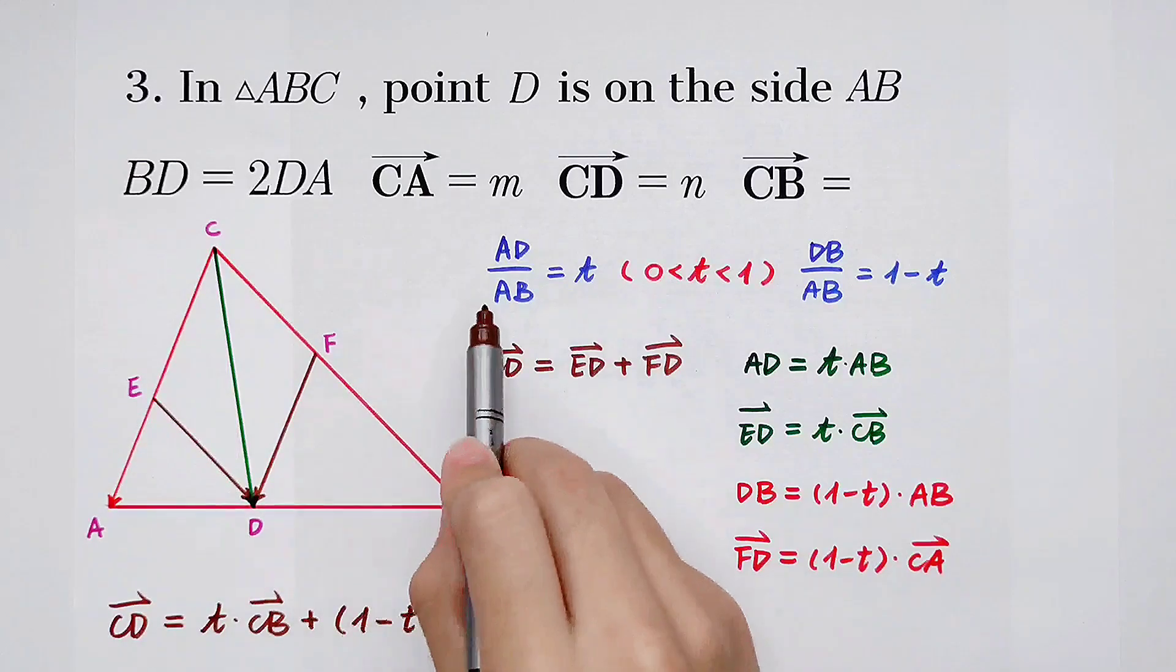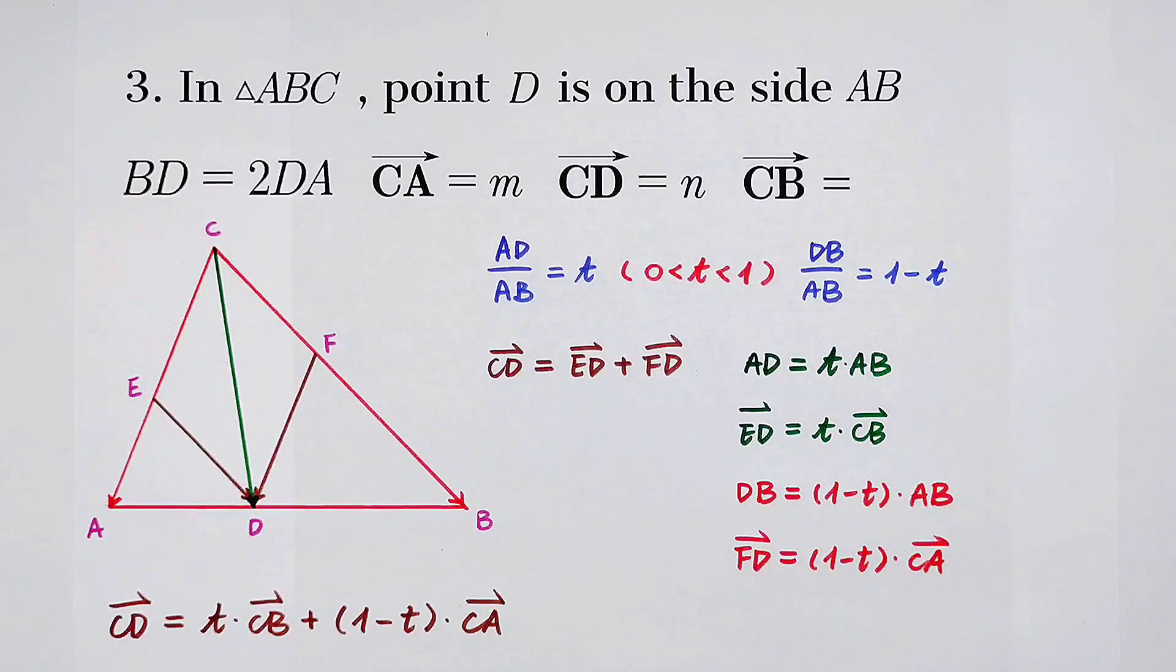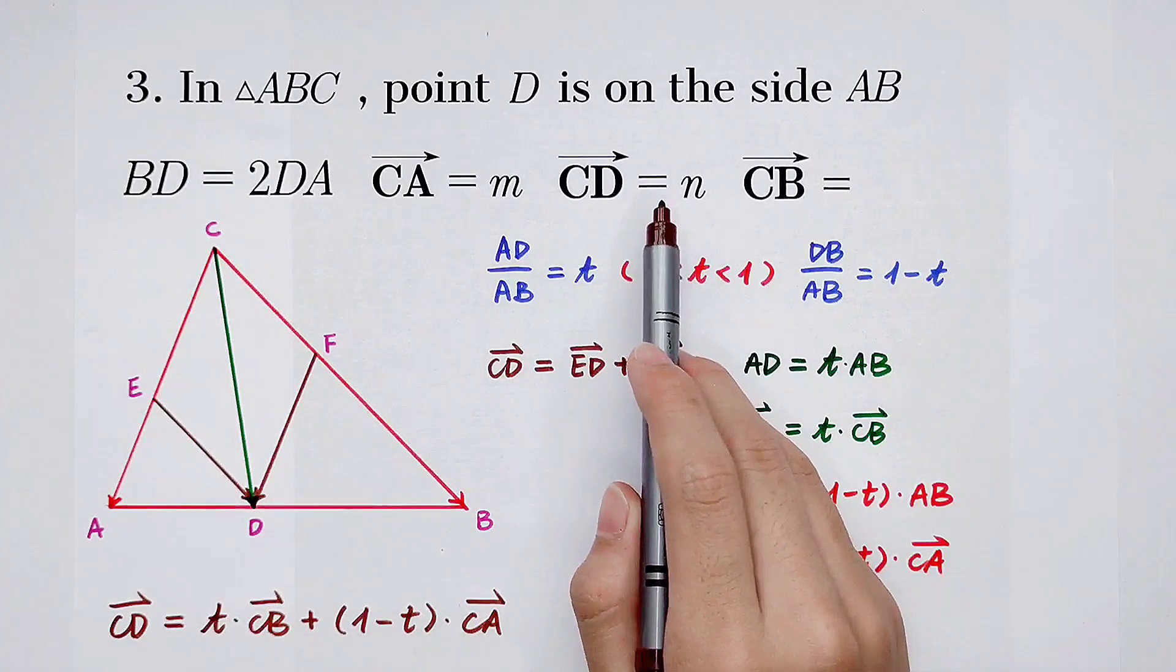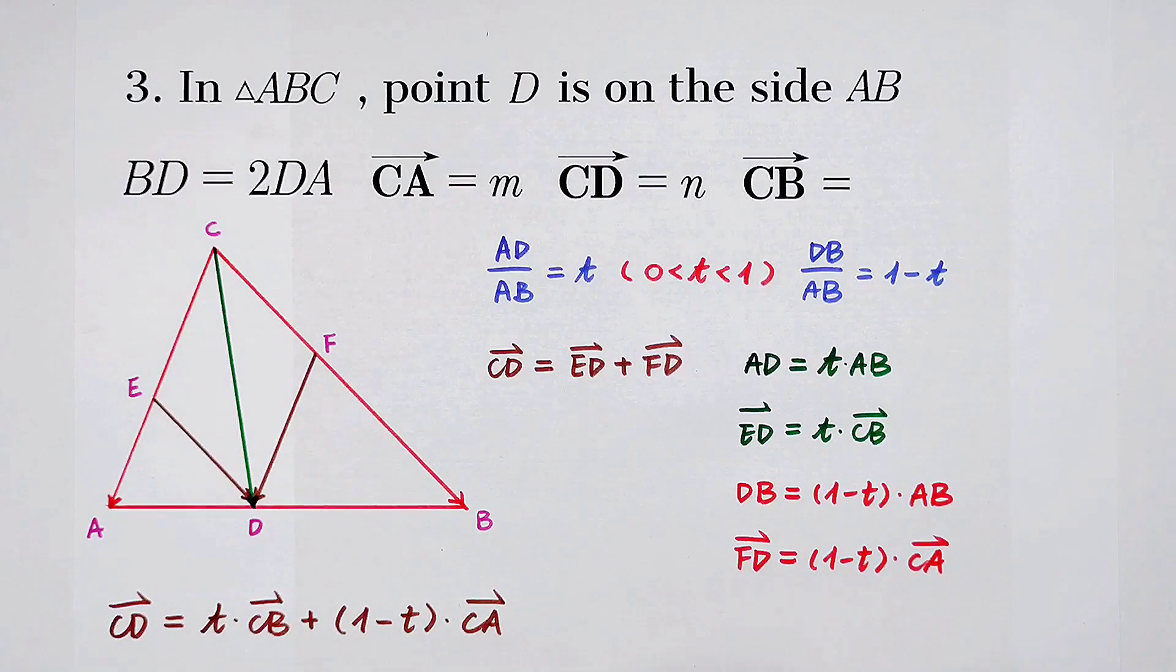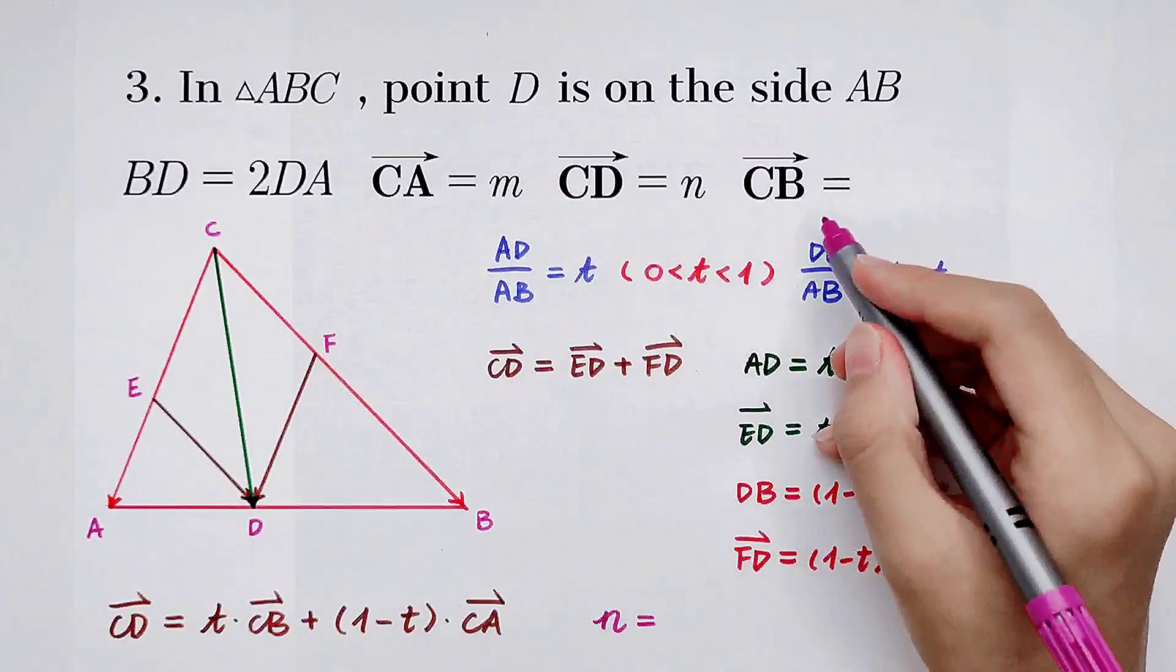And T is this, 1 minus T is this. So we can get this formula. According to this formula, in our this problem, this math question, CD is N, CD is N, CB we solve it.